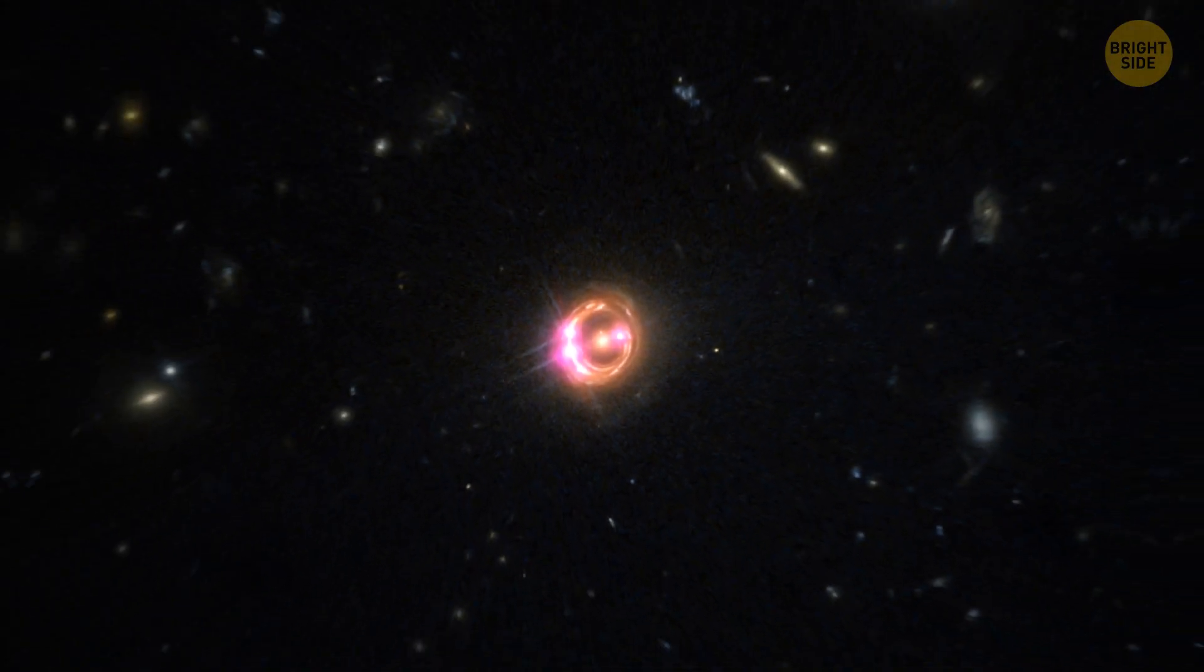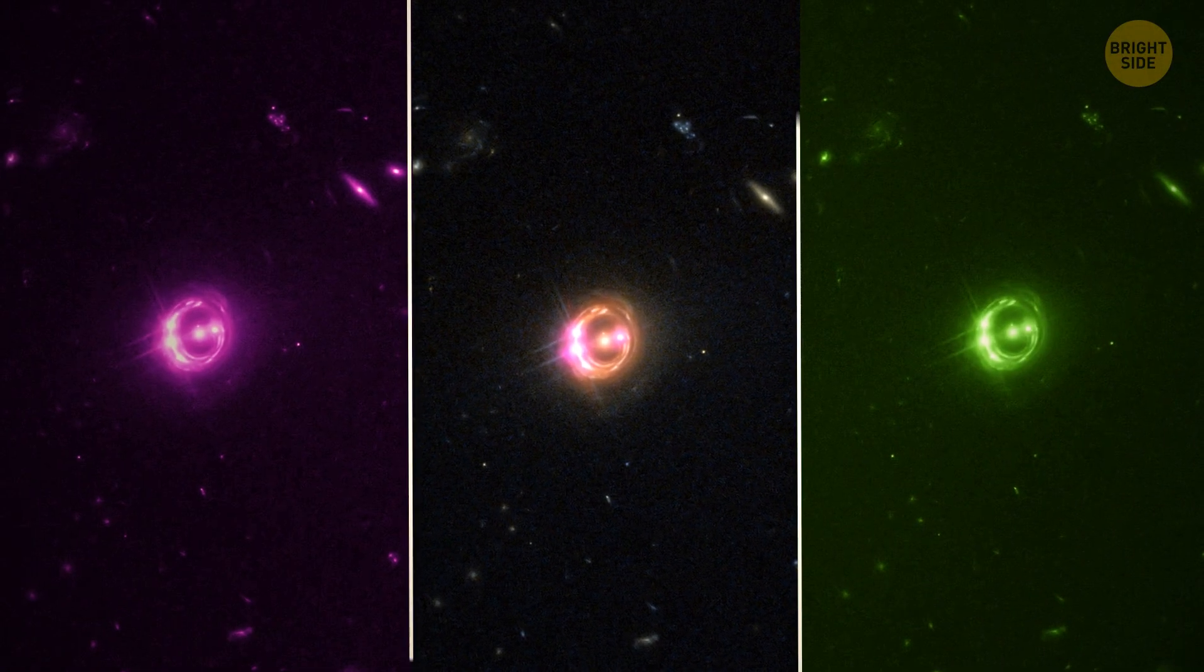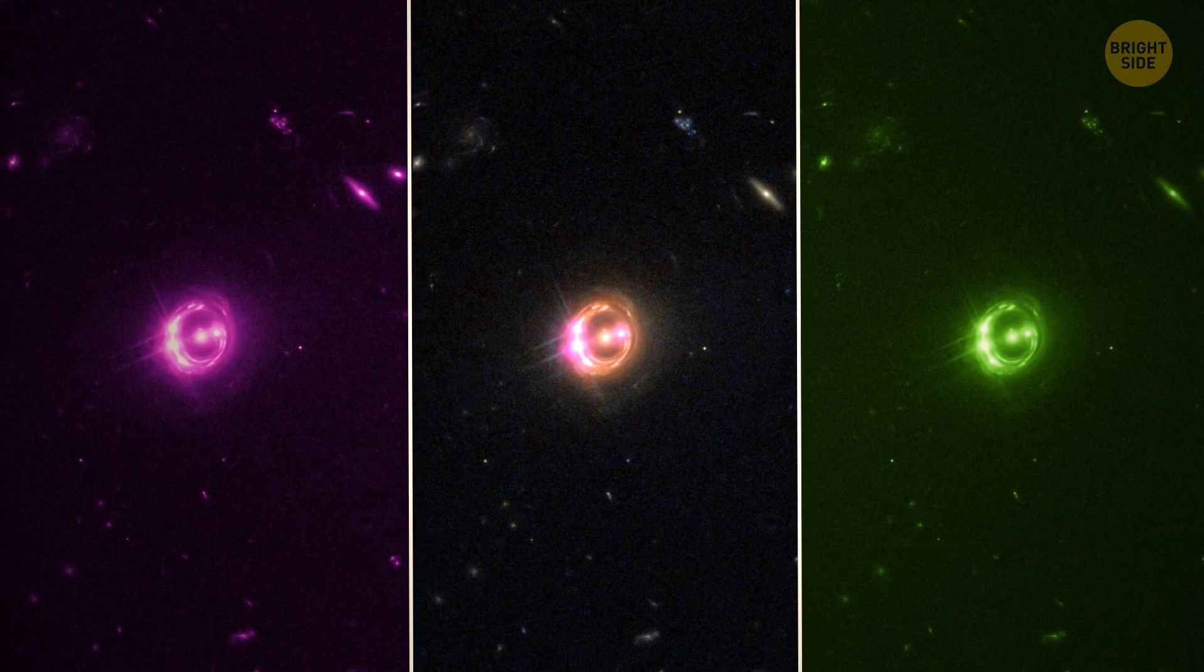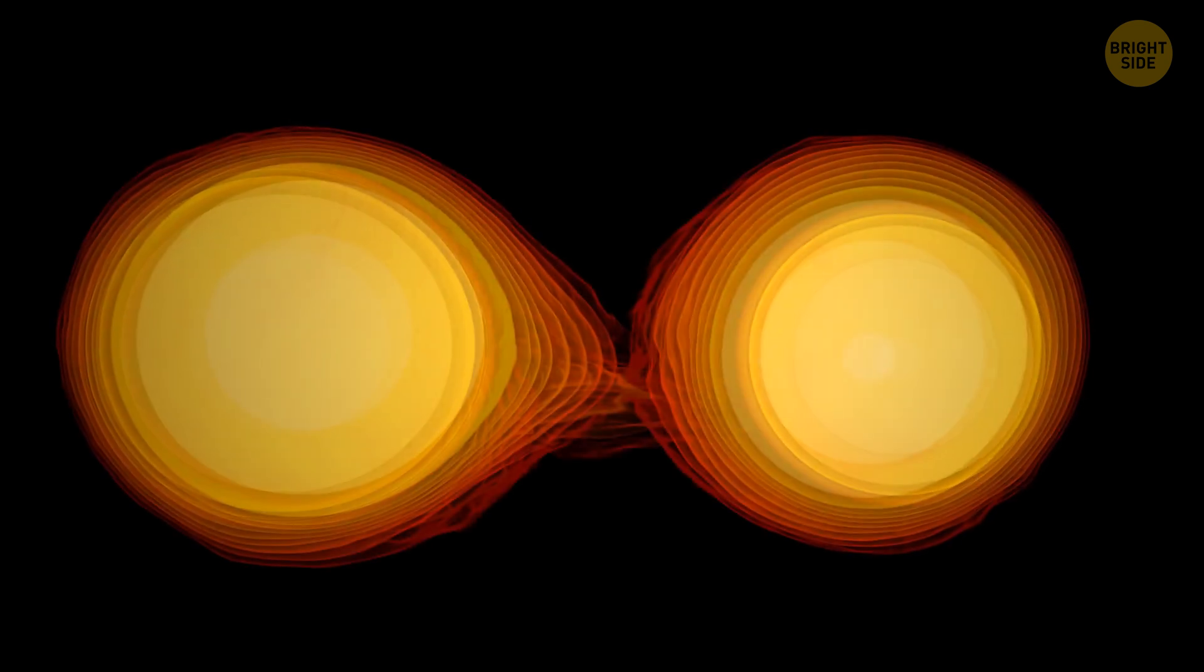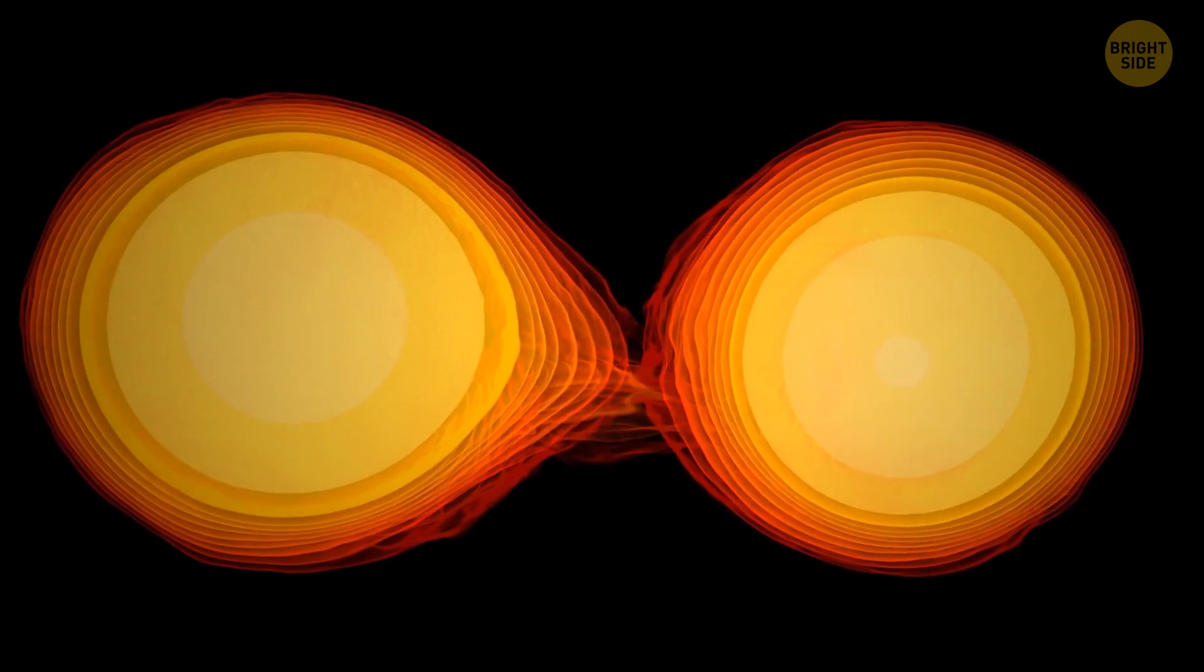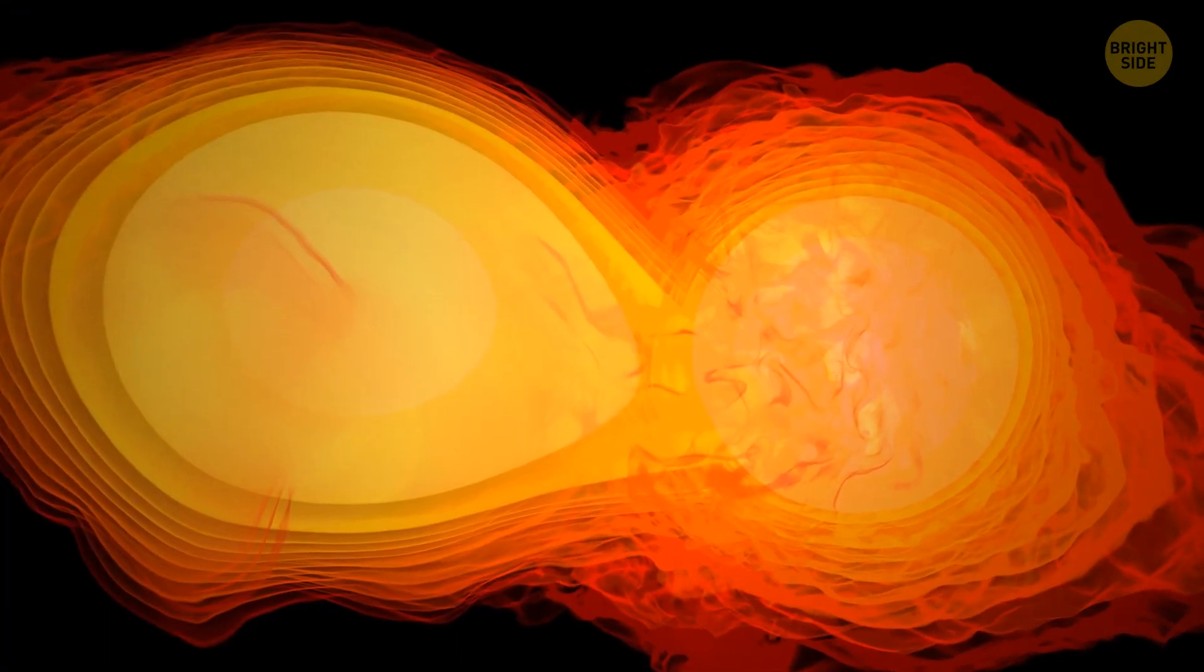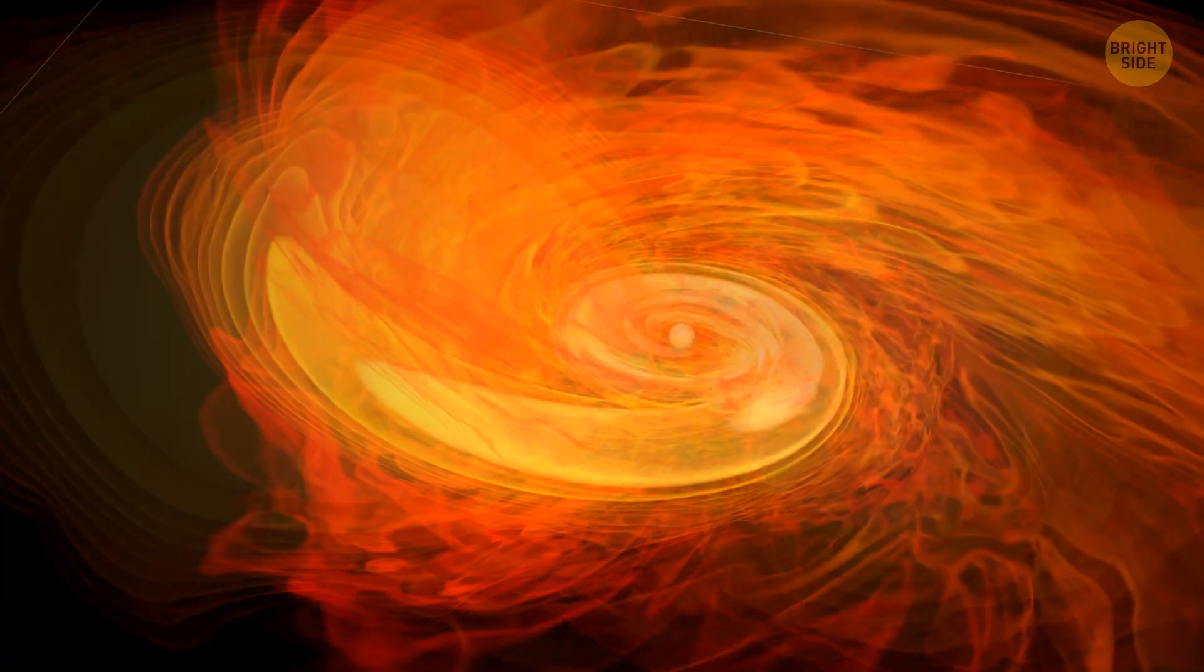Scientists have been observing these black holes across multiple wavelengths of light and have come to the conclusion that they are unique. They're located the closest to each other astronomers have ever seen. The distance between them is a mere 750 light years, which, astronomically speaking, is just next door.